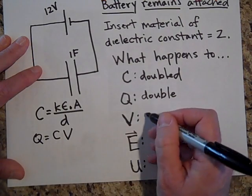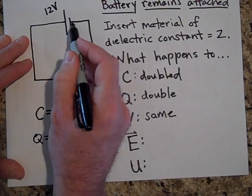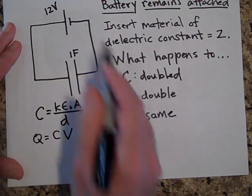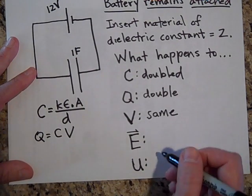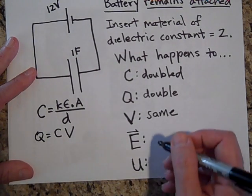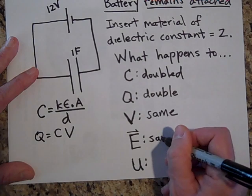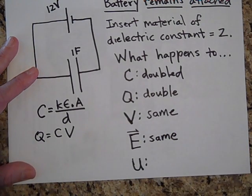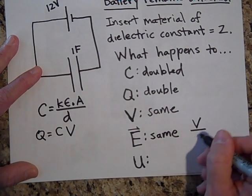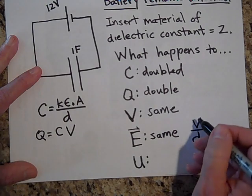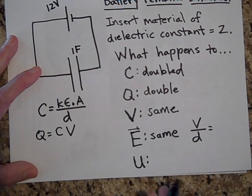The voltage stays the same — it's unchanged — because of the loop rule: when you go up 12 you have to come down 12. The electric field? The electric field stays the same. The electric field is the voltage divided by the distance between the plates. The voltage is still 12 volts and the distance between the plates hasn't changed, so the electric field stays the same.